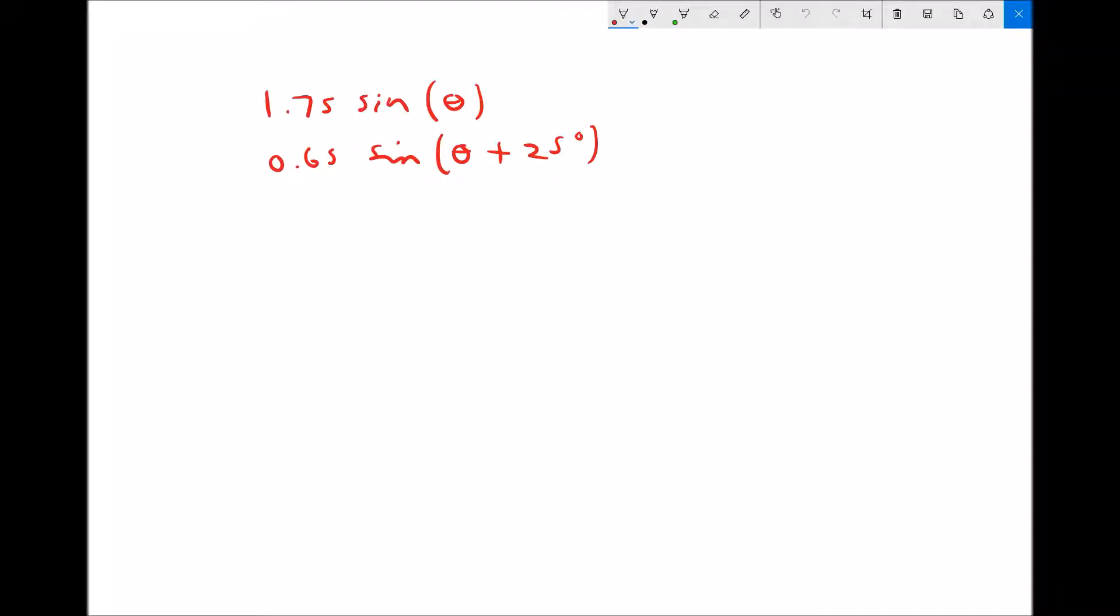So in this video we're going to add the same two functions that we added using a graphical method, except this time we're going to use our trigonometric formula. So we have two functions: 1.75 sin(θ) and 0.65 sin(θ + 25°), and we're going to combine them.